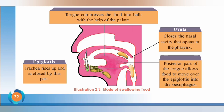The part that prevents the entry of food into the nasal cavity is the uvula. The part that prevents the entry of food into the windpipe is the epiglottis.